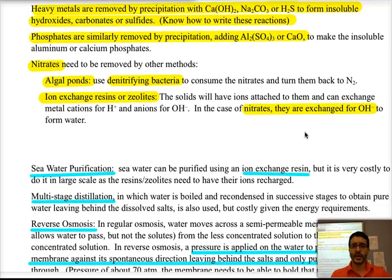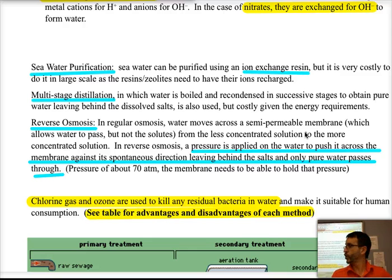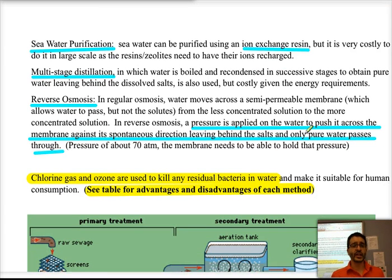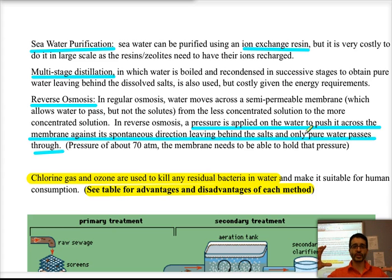If we want to produce water for human consumption, one way is to take seawater and purify it using an ion exchange resin, in which we exchange sodium, potassium, and other positive ions for H⁺ and replace chloride, nitrate, and other anions with OH⁻. The problem is that doing this at large scale is very costly, because the resin needs to be constantly recharged.